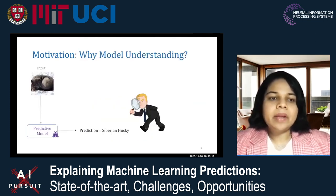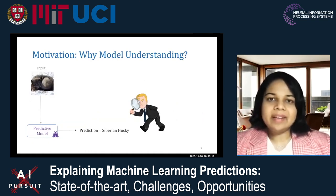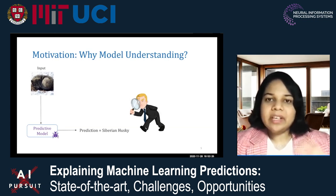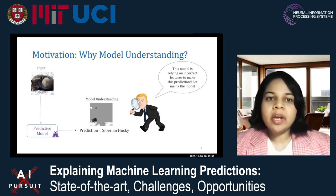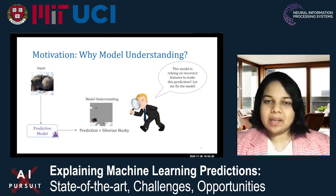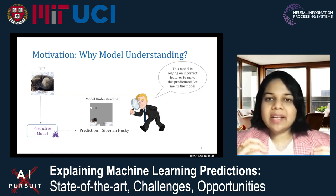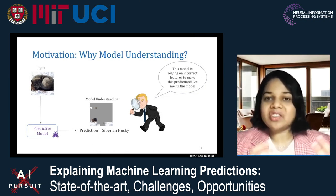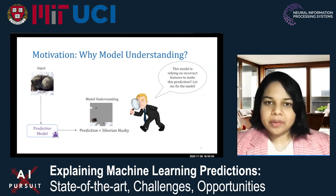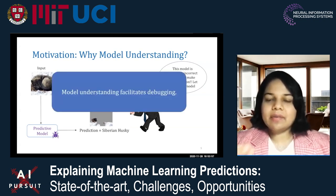Let's take this example where we have an image which is input to a predictive model, and the predictive model correctly labels this image as a Siberian Husky. Now, if we dig deeper and try to understand how the model is making this prediction, we might realize that the model is actually using the snow in the image to tag it as a Siberian Husky. This revelation helps us understand that the model is relying on spurious features, and we might need to go back and debug it. So model understanding in this case facilitates debugging.